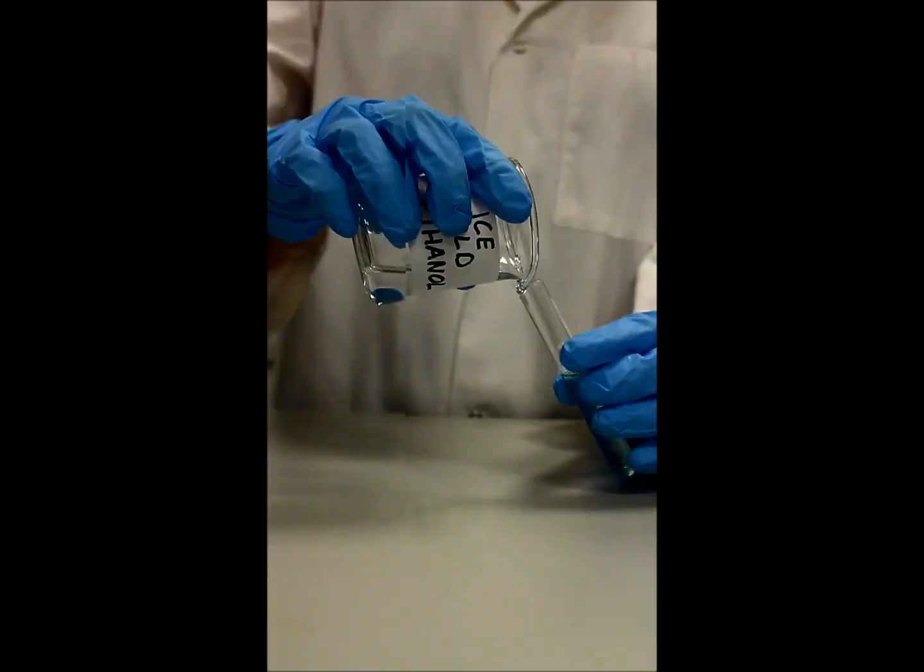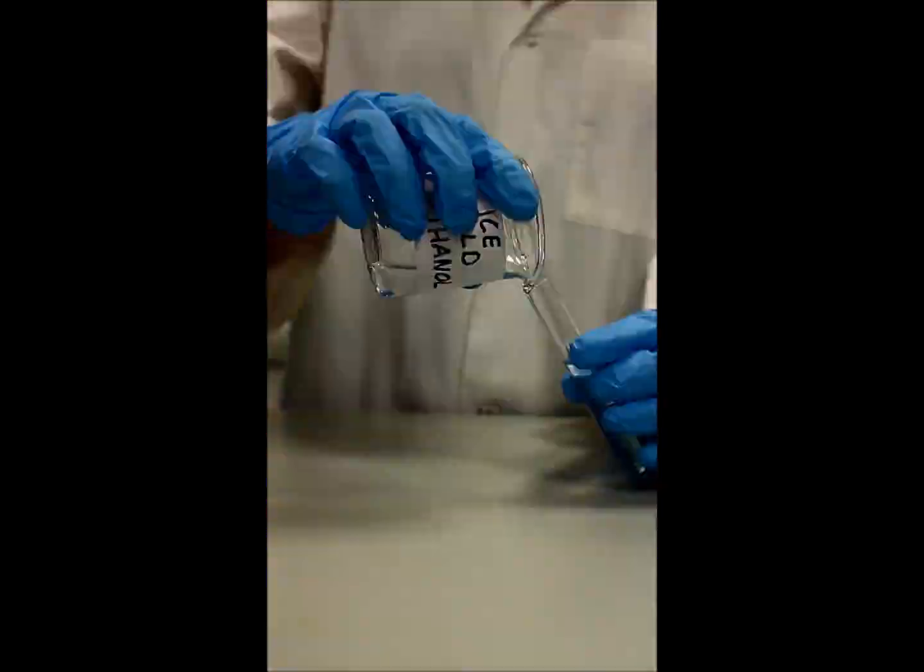Next, ice-cold ethanol is added slowly and carefully at a 45 degree angle so it forms a layer on top of your filtrate.